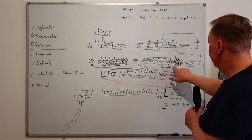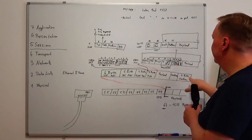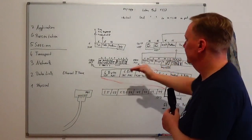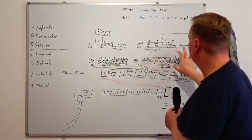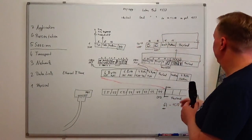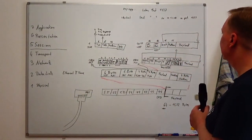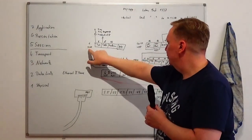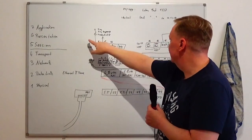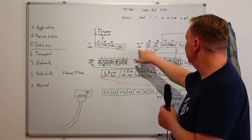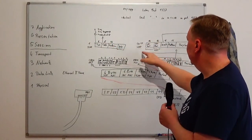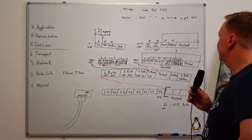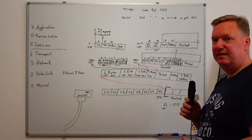I had already told you about the protocol field in the IPv4 packets, which is used to distinguish the layer 4 protocol that will handle the payload in that package. Protocol number 1 is for ICMP, protocol number 17 or hexadecimal 11 is UDP. And today I want to talk about protocol number 6, which is TCP.